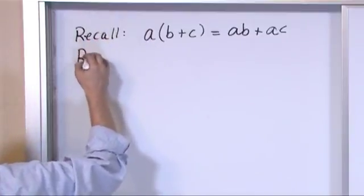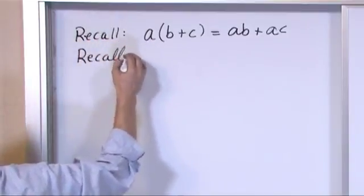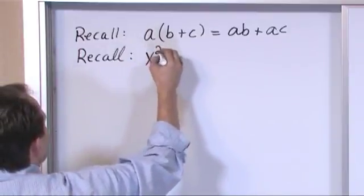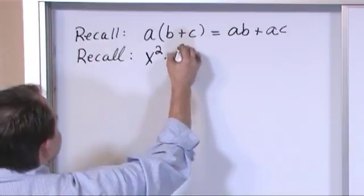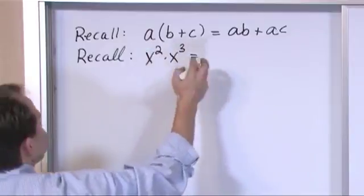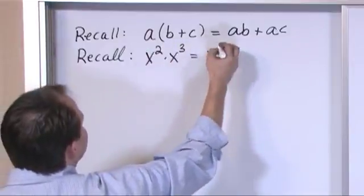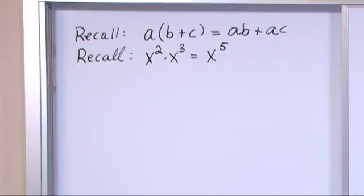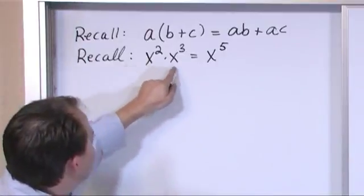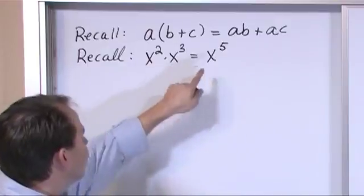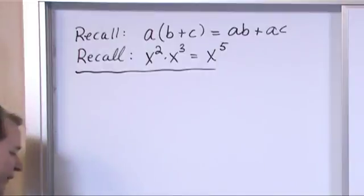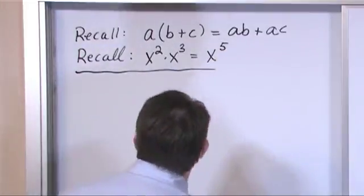I also want you to recall one more thing because we're going to use it a lot. Remember when we have two exponents and we multiply them — let's say x squared times x cubed. As long as the base is the same, when we have two exponents multiplied together we just add the tops: two plus three is five. You can only do that when the bases are multiplied together and the variable is the same. That's all we need to remember from material we've already covered.